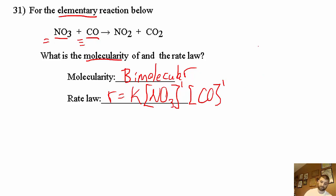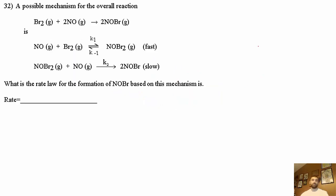Number 32: a possible mechanism for the overall reaction. The second step is the slow step and it wants us to know what is the rate law for the formation of NOBr based on the mechanism. We're going to have to do this in a couple of steps.